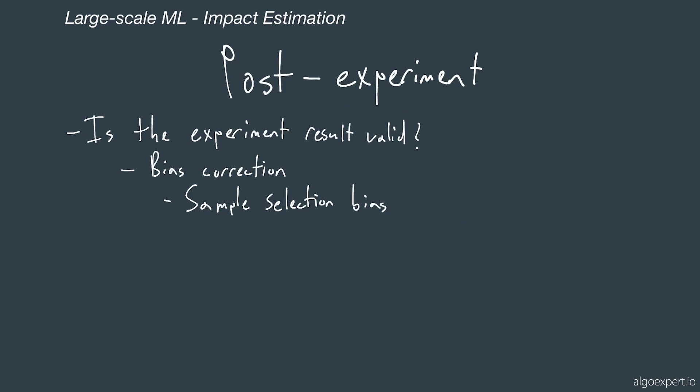Now let's move on to the post-experiment. One question we'll want to ask is: are these experiment results valid? One thing we'll have to do is correct for bias. Sample selection bias happens when users placed in a particular group had a predisposition to behave a certain way regardless of the group they were in. For example, in the push notification experiment, if results showed treatment B was far better, but users sent to group B were historically more likely to click push notifications anyway, we would have to correct for that bias.